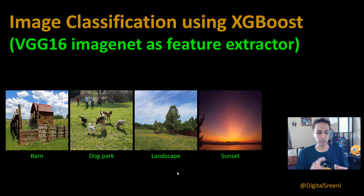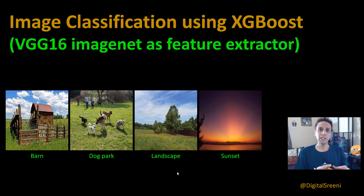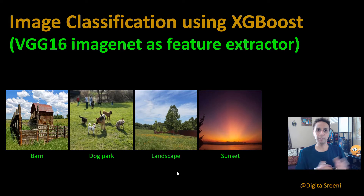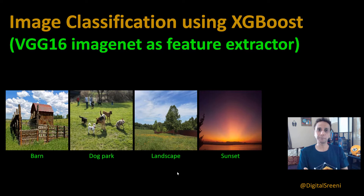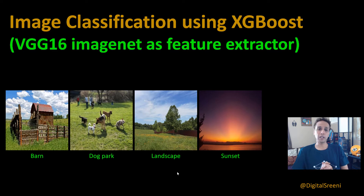So any application where you think of random forest, think of using XGBoost instead to optimize it for speed and possibly also for accuracy. In the last video we used XGBoost for semantic segmentation where we did pixel-level image classification. Now in this video let's look at image-level classification — meaning you have an image and you say: is this a barn, is this a dog park, is this a landscape, or a sunset? This is our classic image classification.